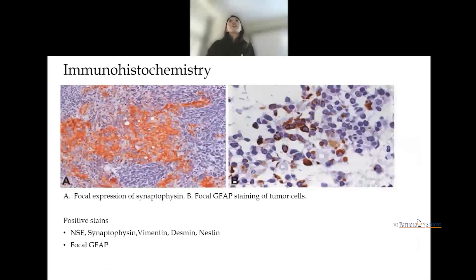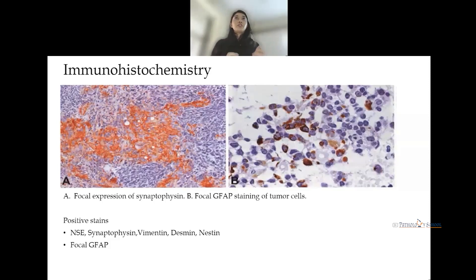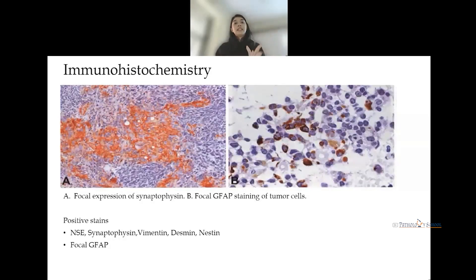Because these tumors have high neuronal differentiation, we use immunohistochemical markers like synaptophysin, and they are sometimes positive for gliofibrillary acid protein (GFAP). The positive stains used for medulloblastoma are neuron-specific enolase (NSE), synaptophysin, vimentin, desmin, nestin, and focally GFAP.